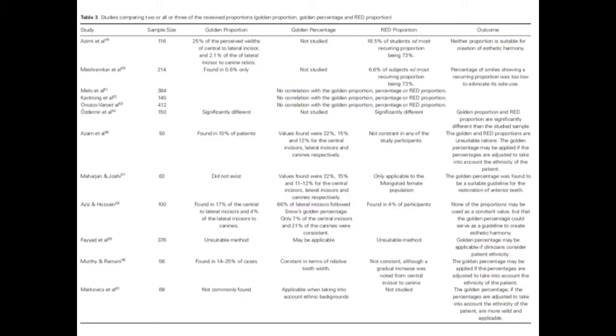Several of the articles reviewed compared two or all three of the proportions and attempted to identify which proportion was most suitable for predictable aesthetic outcomes. Over half of the reviewed articles advocated that none of the proportions was suitable, whereas the remaining articles proposed that the golden percentage may be applicable if clinicians took into account the ethnic background of the patient.